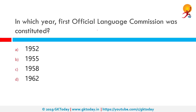In which year was the First Official Language Commission constituted? The correct answer is 1955. The first official Language Commission was constituted under B.G. Kher as Chairman, appointed in 1955. It submitted its report in 1956, which was presented to Parliament in 1957 and examined by a Joint Parliamentary Committee.